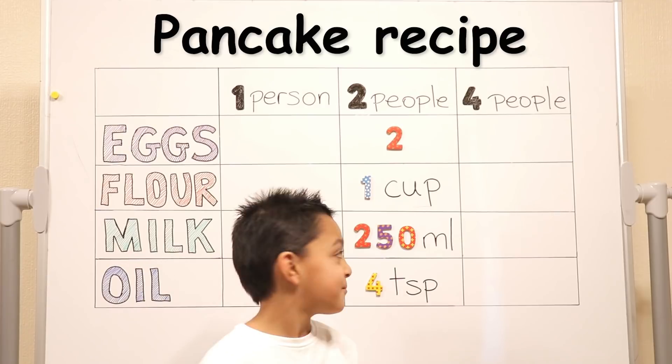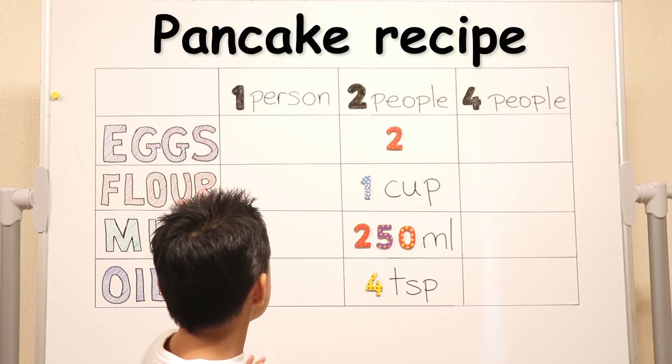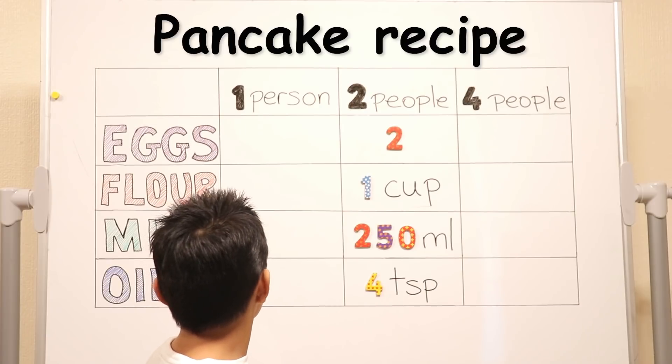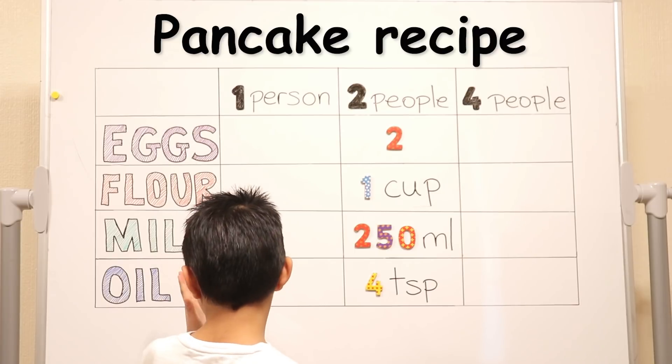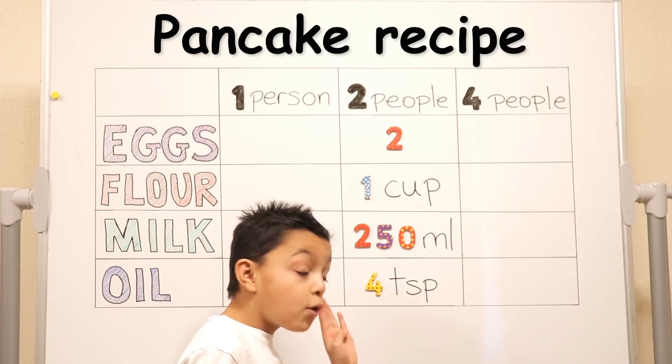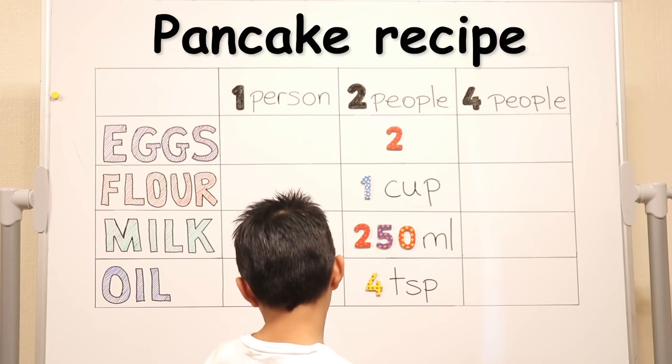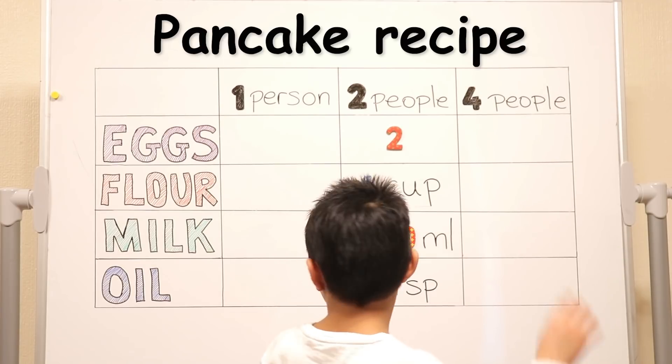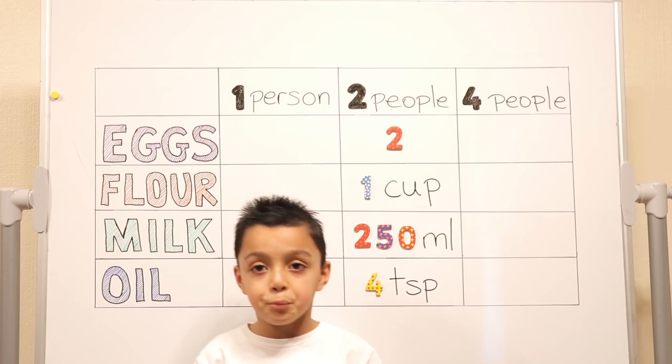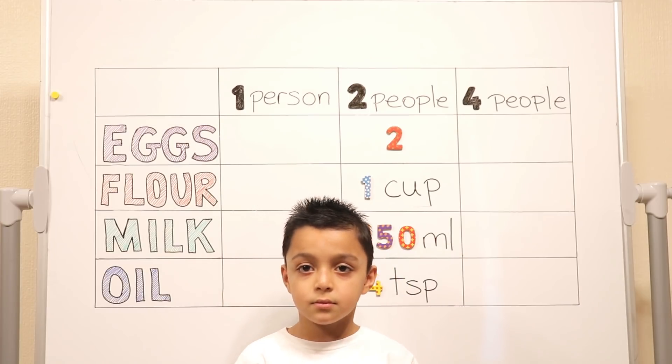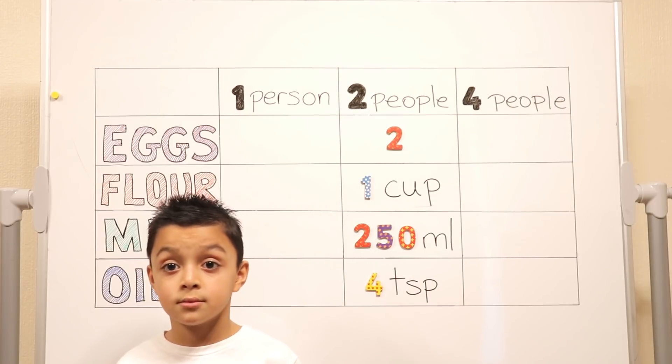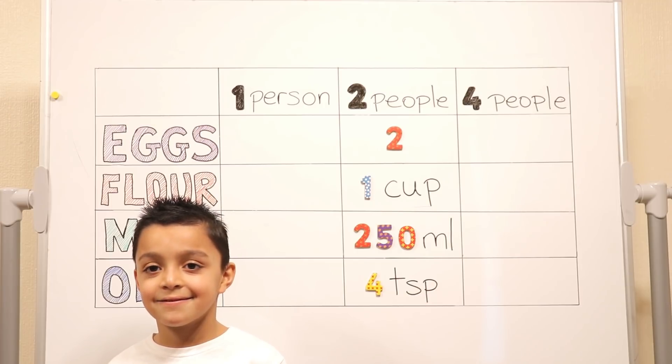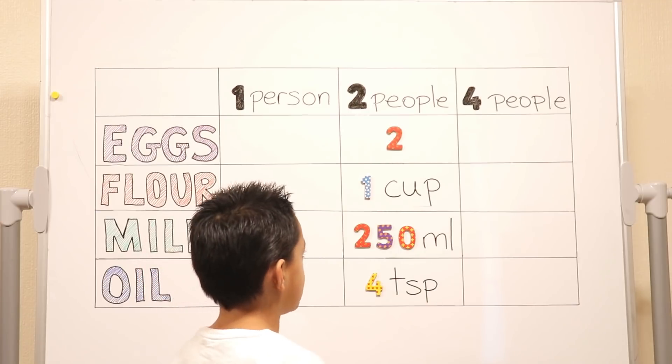So can you just show us that one more time? For two people, what ingredients do we need? Two eggs, one cup of flour, 250 milliliters of milk, and four teaspoons of oil. Excellent Niall. Now, if that's the amount of ingredients you need to make pancakes for two people, how would you find out how much ingredients you need to make pancakes for one person? You half it.